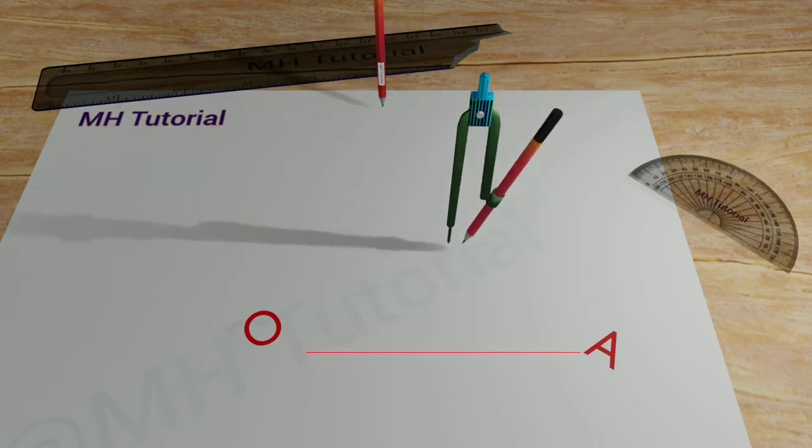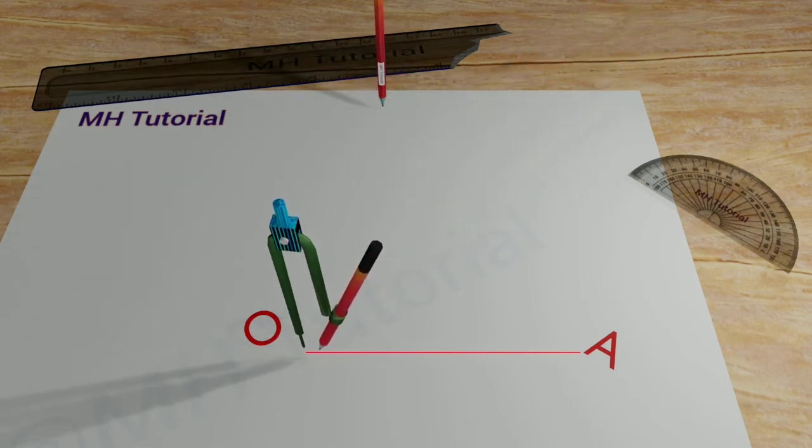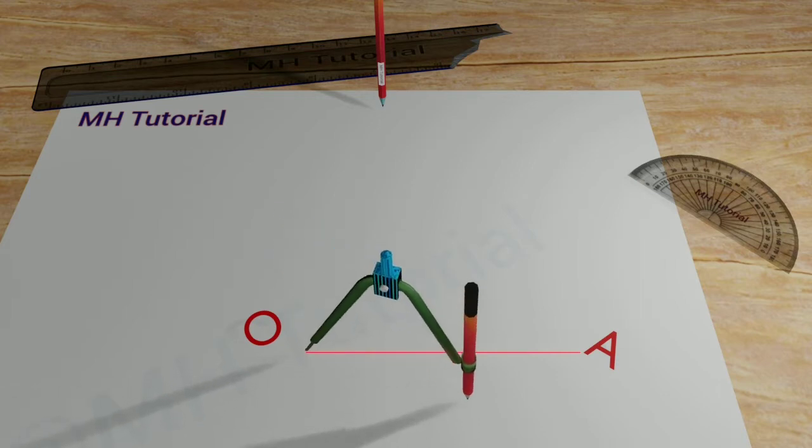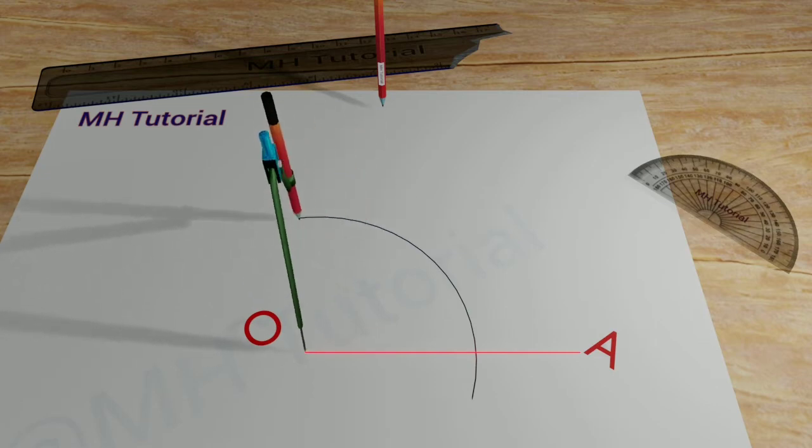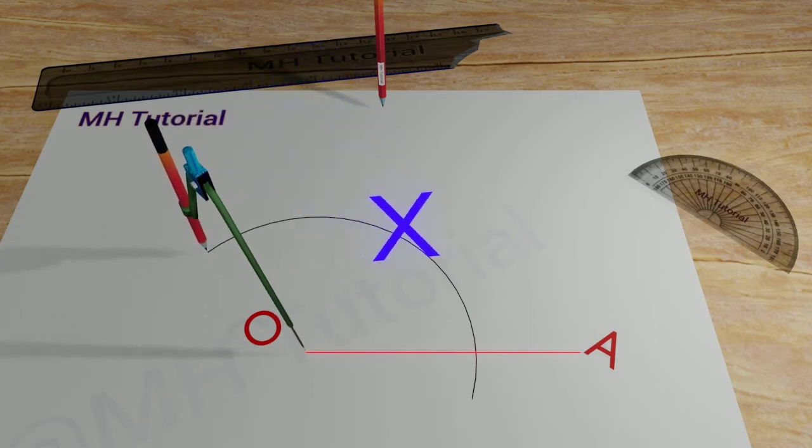Next, a pencil compass is taken. A large circle arc is drawn, with the tip of the compass placed at the point O. The arc of the circle intersects the straight line OA at point X.